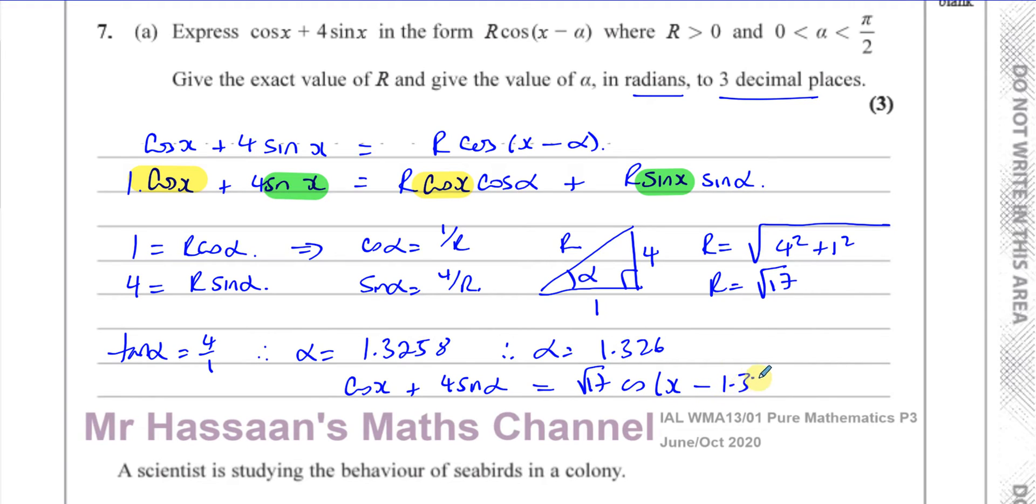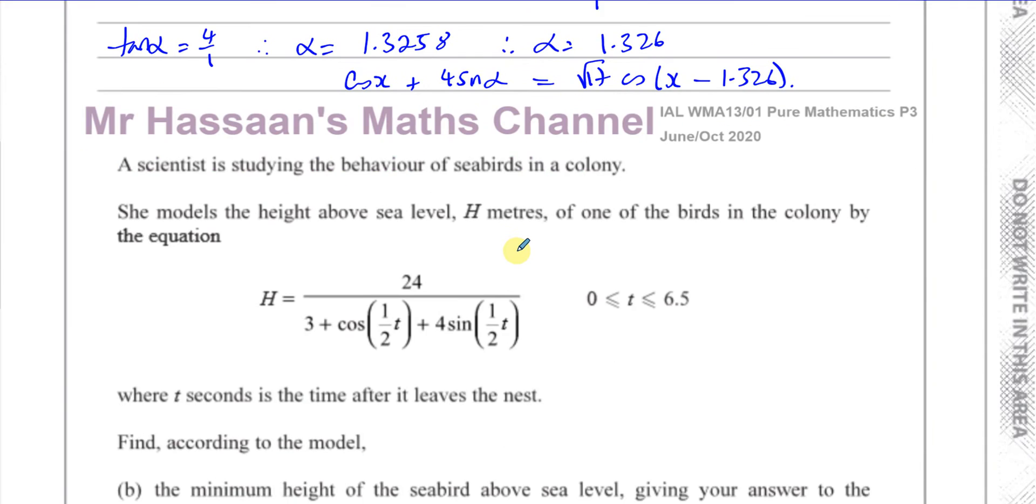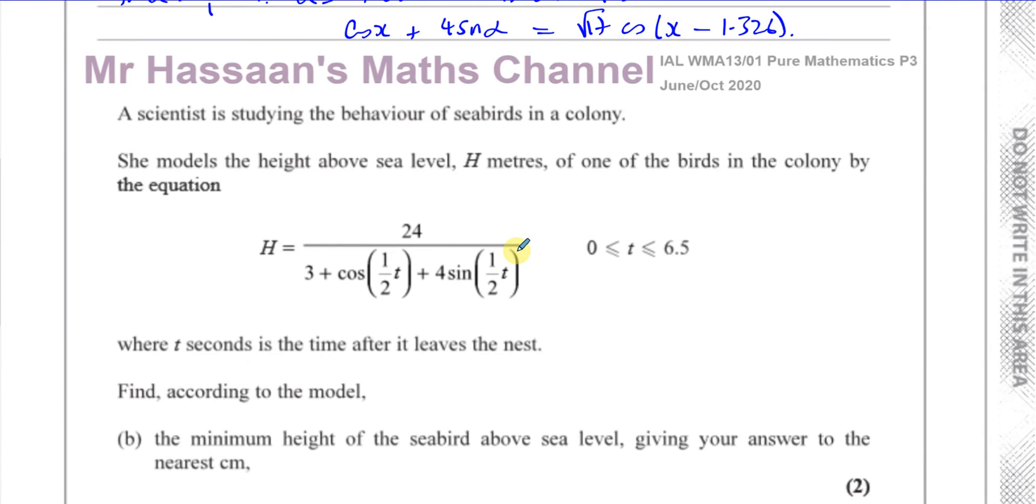Then it says a scientist is studying the behavior of seabirds in a colony. She models the height above sea level h meters of one of the birds in the colony by the equation h equals 24 over 3 plus cosine half of t plus four sine of half of t, where t is between 0 and 6.5, where t seconds is the time after it leaves the nest. Find, according to the model, the minimum height of the seabird above sea level, giving your answer to the nearest centimeter.